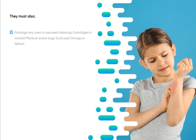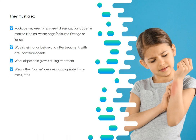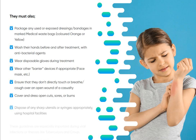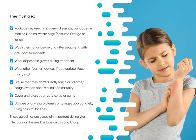First aiders must also: package any used or exposed dressings or bandages in marked medical waste bags coloured orange or yellow; wash their hands before and after treatment with antibacterial agents; wear disposable gloves during treatment; wear other barrier devices if appropriate, such as a face mask; ensure they do not directly touch, breathe, or cough over an open wound; cover and dress open cuts, sores, or burns; and dispose of any sharp utensils or syringes appropriately using hospital facilities. These guidelines are especially important during viral infections or illnesses such as tuberculosis and croup.